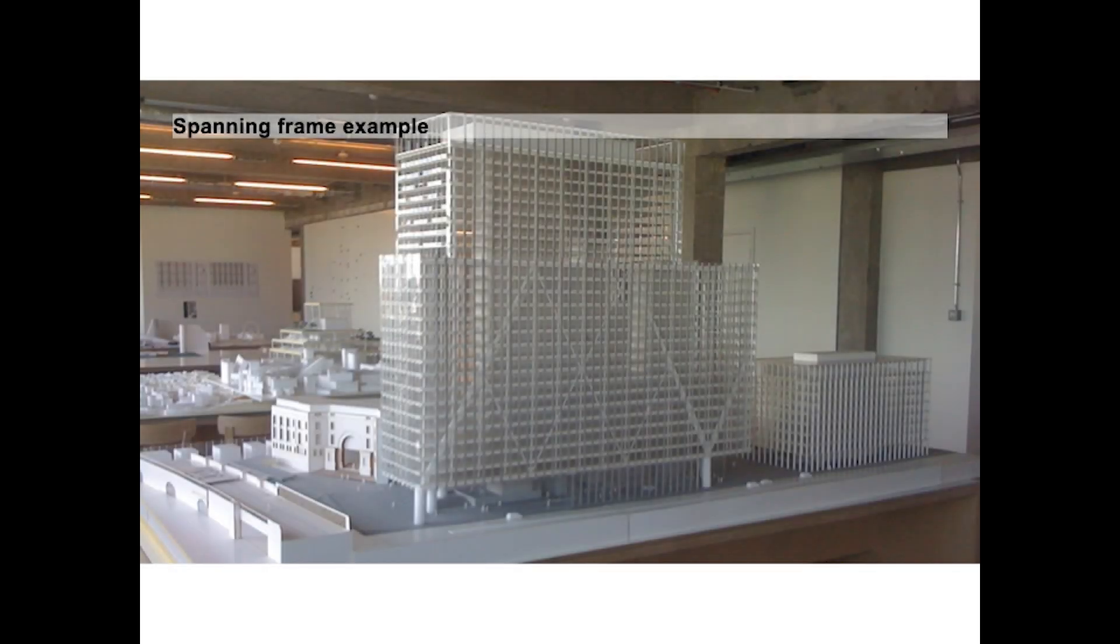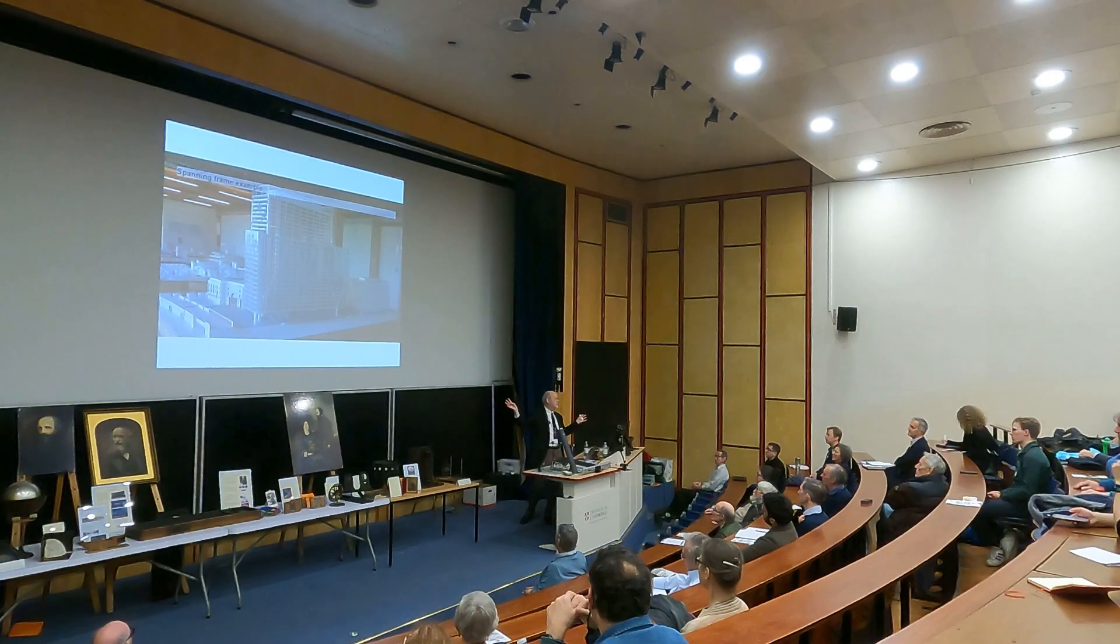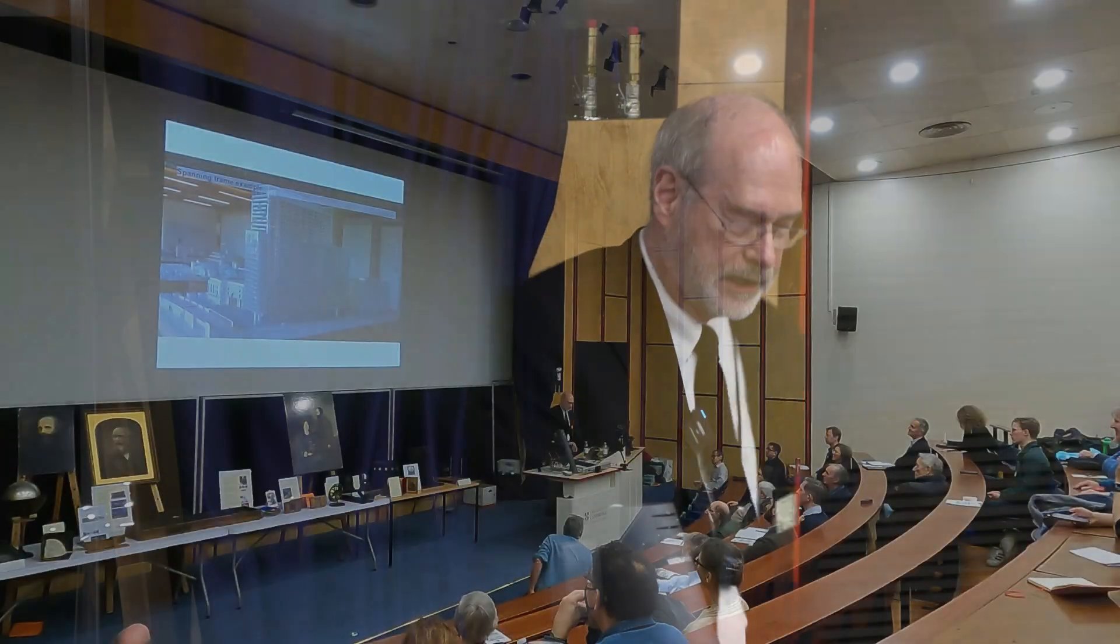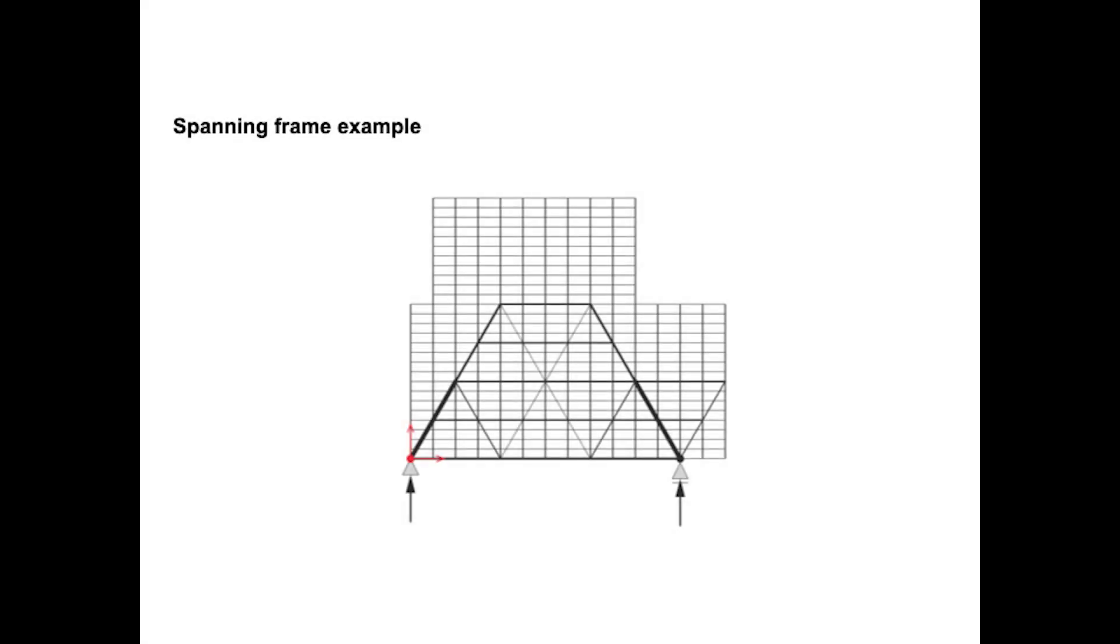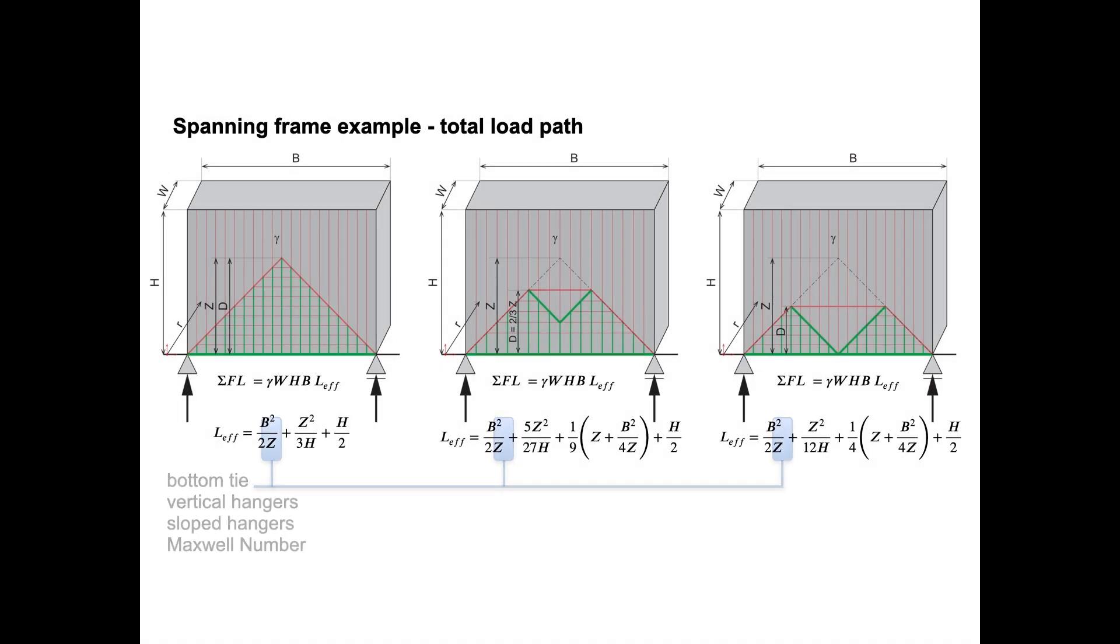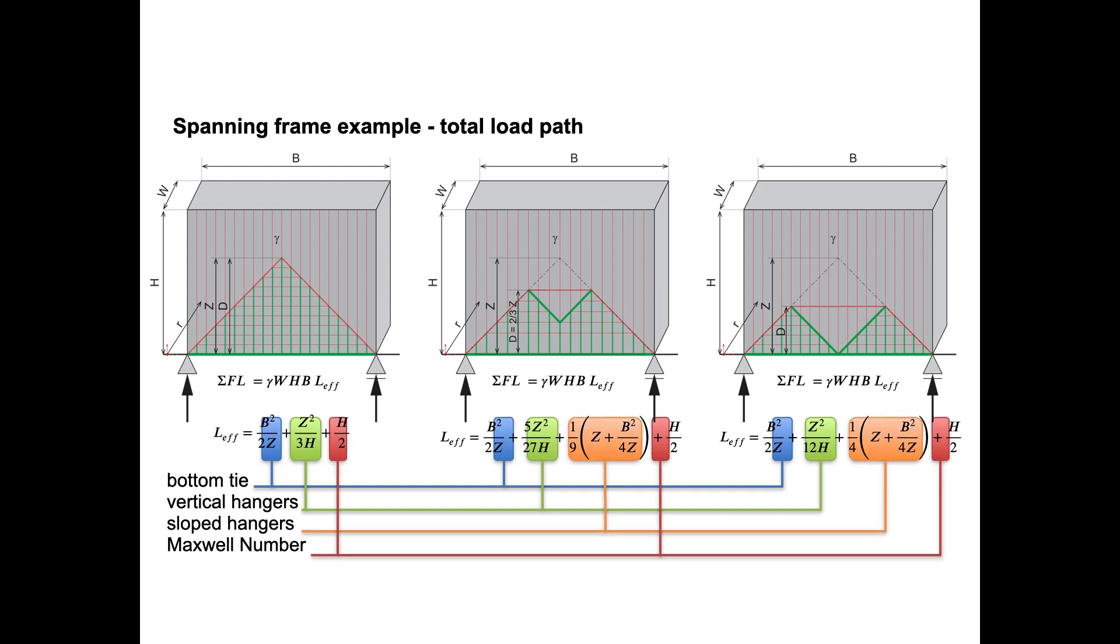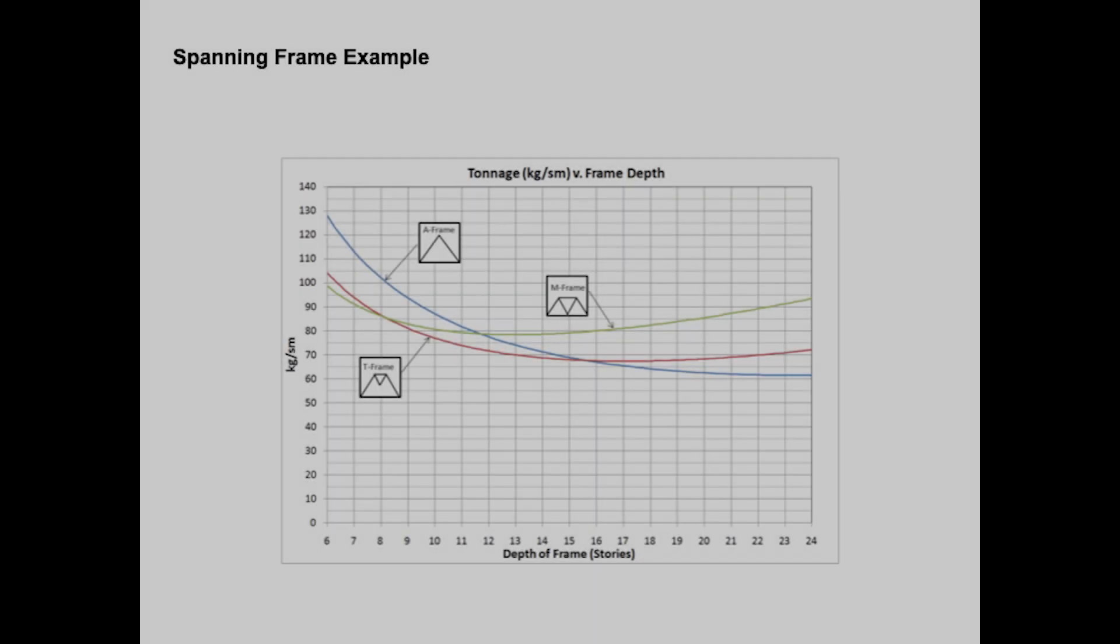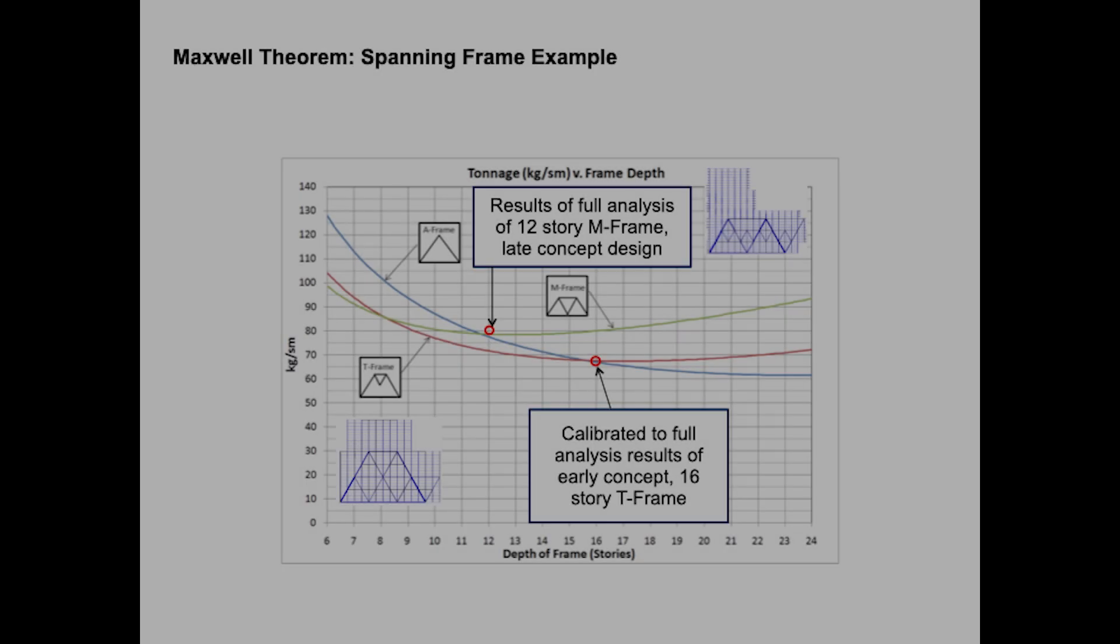I was working on this project in London, next to Waterloo train station. The project never got built. This building has eight tunnels under it: the Jubilee Line, the Northern Line, the Bakerloo, and the Waterloo and City lines. There's almost no dirt under this building left. We designed the structure that could span over it. Because of that theorem, we only have to calculate the tension members. We do not have to calculate the compression members. We were able to calculate the entire volume of structure in the entire building by only calculating the tension members.